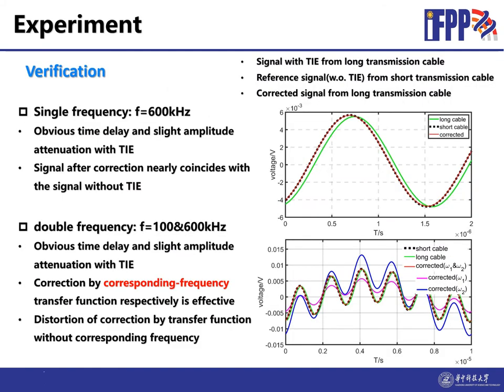Now we can compare the signals from long cable, short cable, and the corrected signals to verify the correction method. First, we set the frequency of the signal to 600 kHz. Here is the result. Black dot is the signal from short cable. Green is from the long cable. There is an obvious time delay and slight attenuation between these two signals. The difference is caused by the effect of the transmission line. After correction, the green line is corrected to the red one. The red one is coincided with that from the short cable.